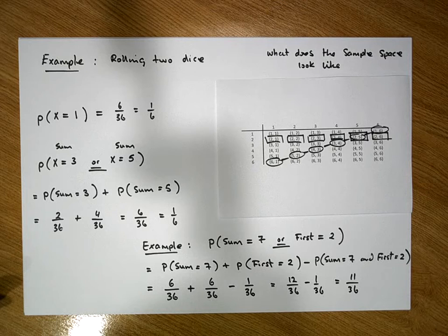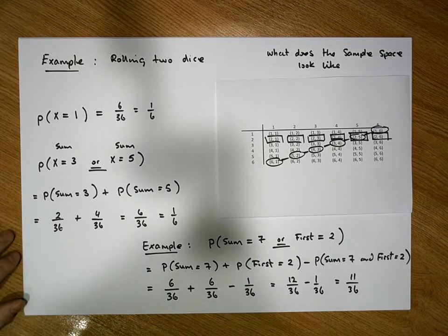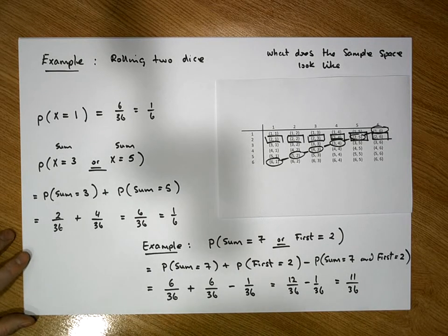So there are 11 chances out of 36 of rolling two dice such that the sum equals seven or the first die's value equals two.